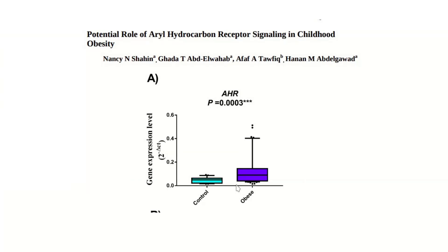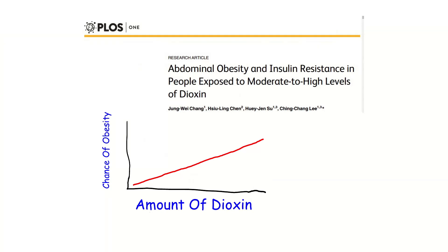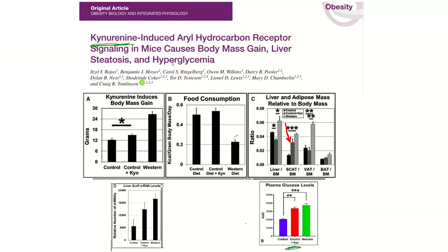An Egyptian study looked at AHR levels in obese children — obese children make way more AHR than lean children. A paper on dioxin toxicity shows that humans with significant amounts of dioxin in their fat tissue are much more likely to be obese. A mouse study fed kynurenine to mice on a very low-fat diet that classically would keep mice lean. These mice are still significantly fatter, especially with more subcutaneous adipose tissue. Feeding mice kynurenine, which activates the AHR, produces more fat tissue. The kynurenine also upregulates levels of lipogenic enzymes — that's what it does.